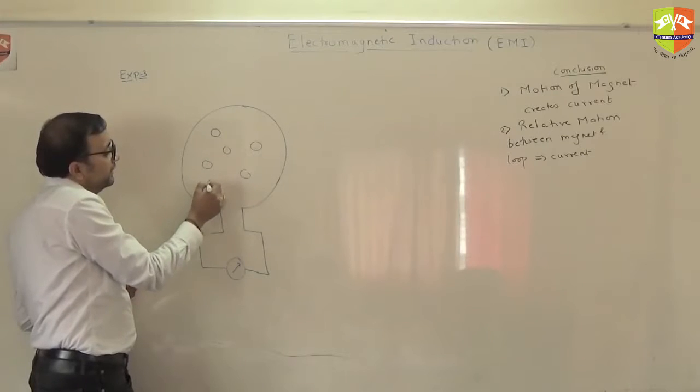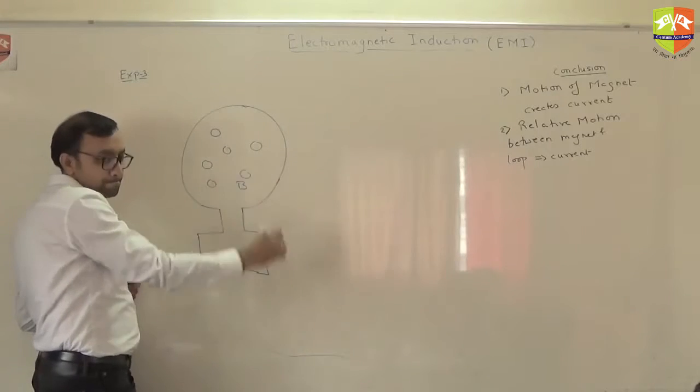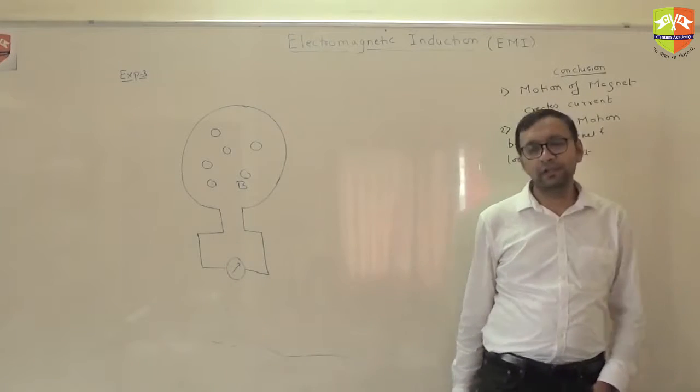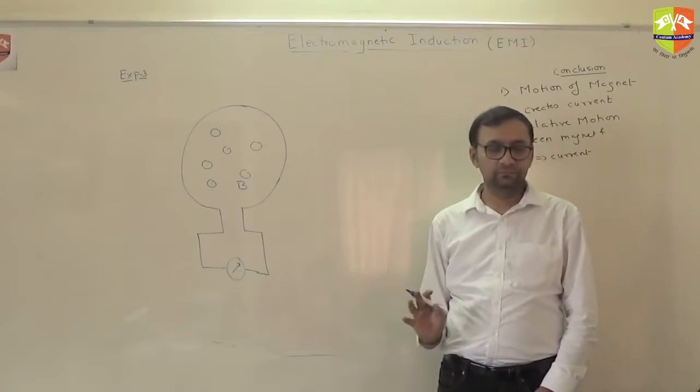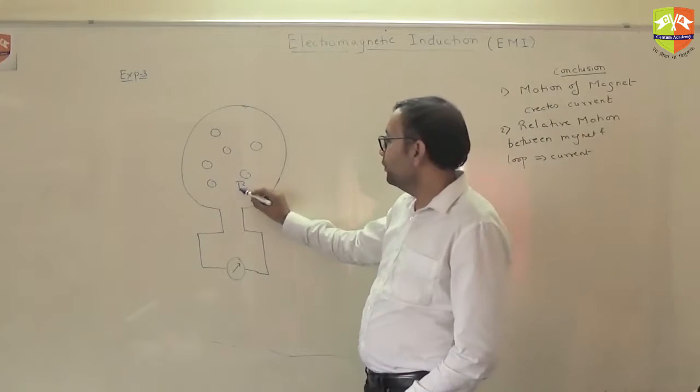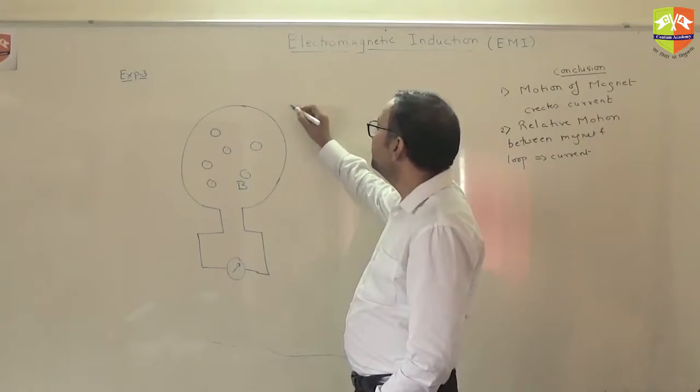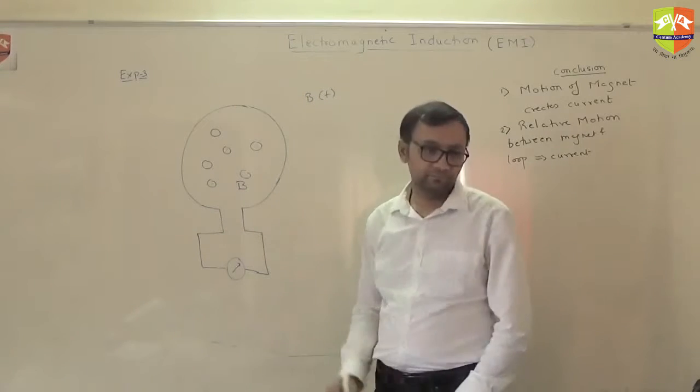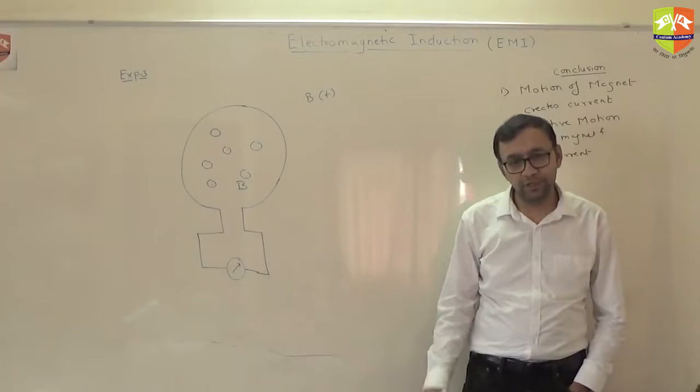The magnetic field is like this, B. Somehow you are creating the magnetic field. Now, what you are doing is you are changing magnetic field with time. B changes with time. B started to change.